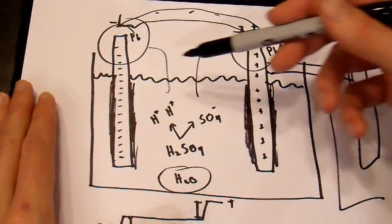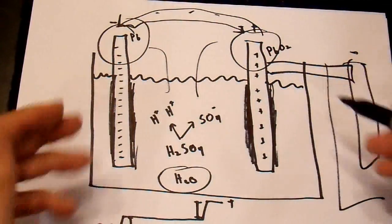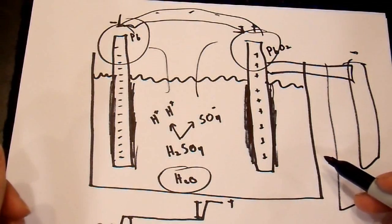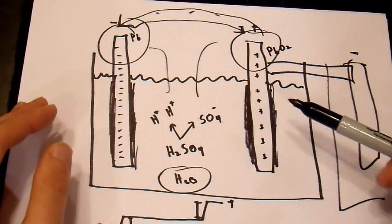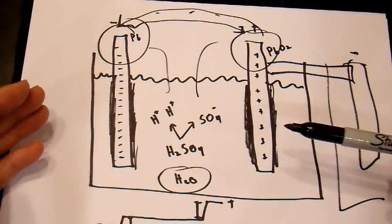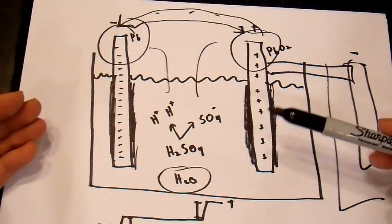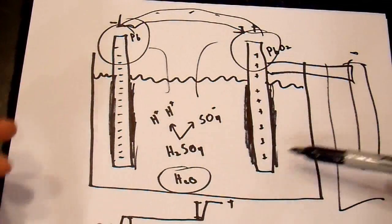For example, if you have a lead antimony battery in particular, their efficiency is lower than a lead calcium battery. And, part of the reason for that is because they outgas. You have electrolysis at the terminals here. And, the battery acid actually splits into hydrogen and oxygen. And, some of that escapes.